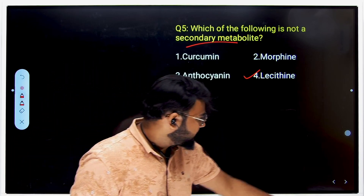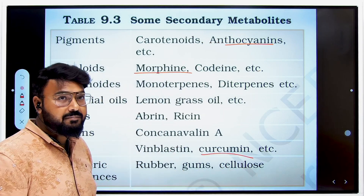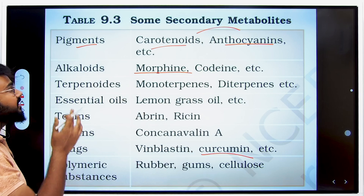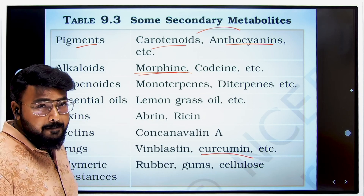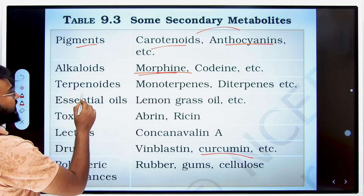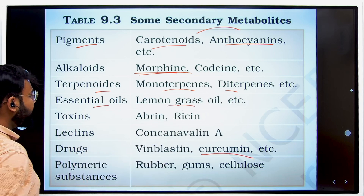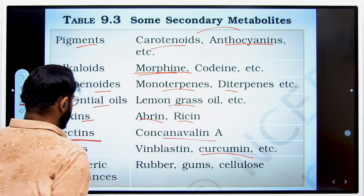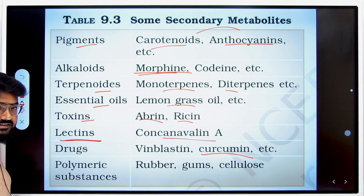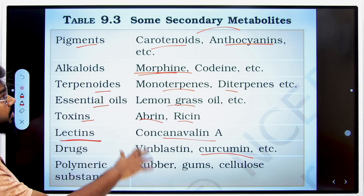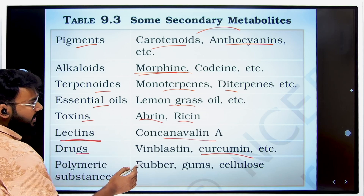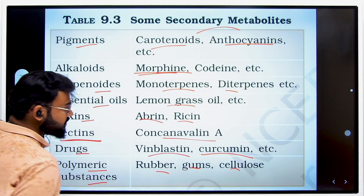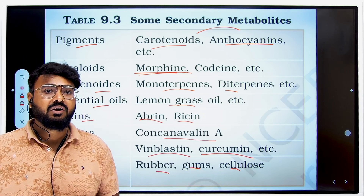In the NCRT biomolecules chapter table, secondary metabolites include: pigments like anthocyanins and carotenoids; alkaloids like morphine and codeine; terpenoids like monoterpenes and diterpenes; oils like lemongrass oil; toxins like abrin and ricin; lectins like concanavalin A — note that lectins and lecithin are different words; drugs like vinblastin and curcumin; and polymeric substances like rubber, gum, and cellulose. Lecithin is a phospholipid, not a secondary metabolite.